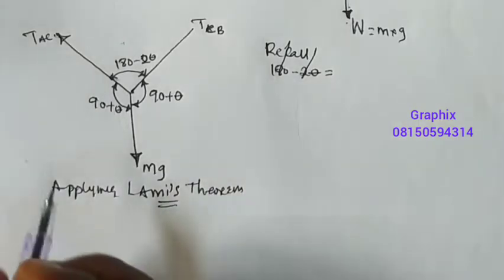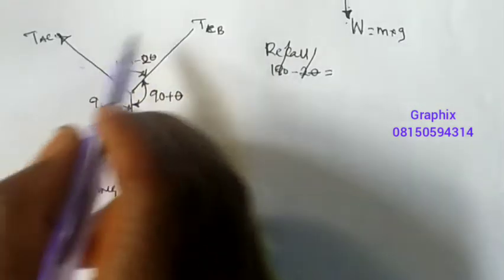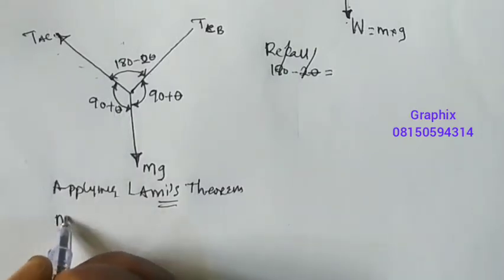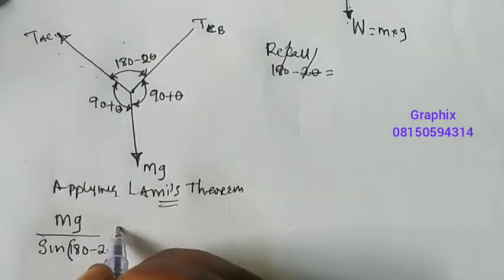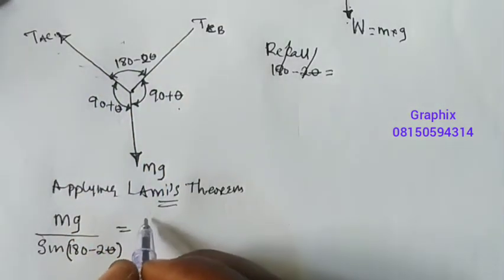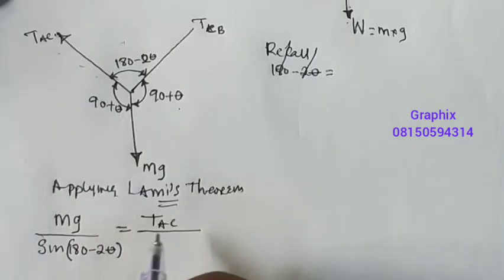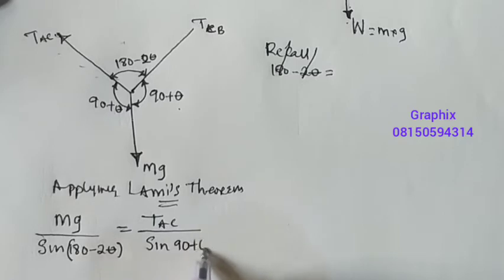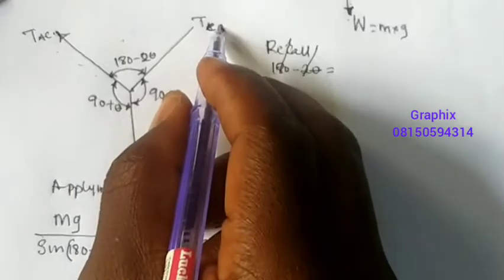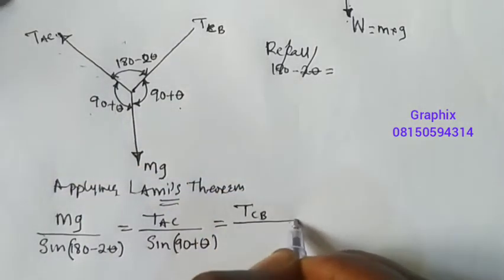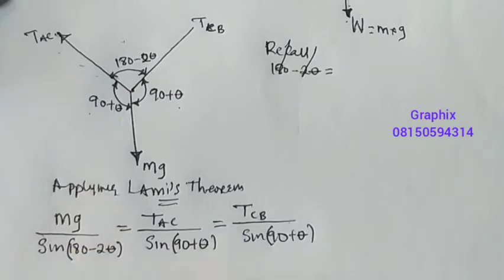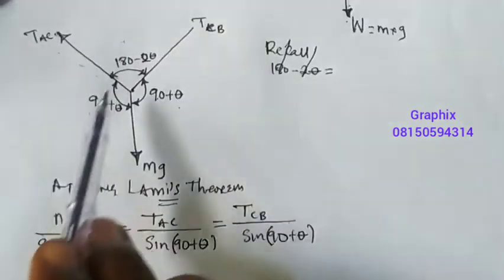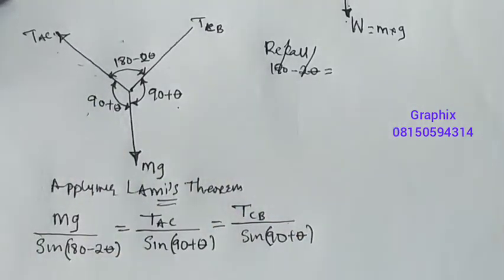Lami's Theorem states that each force divided by the sine of the angle between the other two forces must be equal. So: mg over sine(180 minus 2 theta) equals T_AC over sine(90 plus theta), which also equals T_CB over sine(90 plus theta). This is Lami's Theorem — force over sine of the opposite angle.